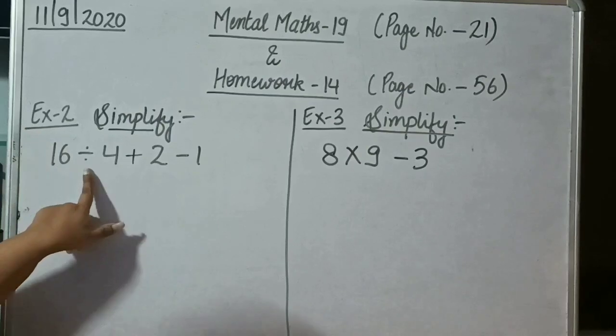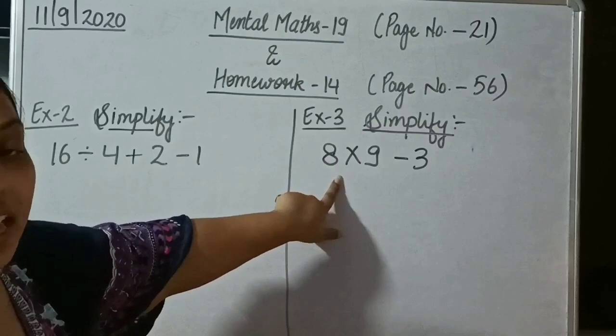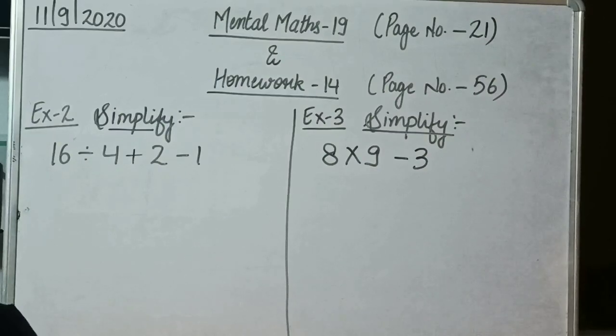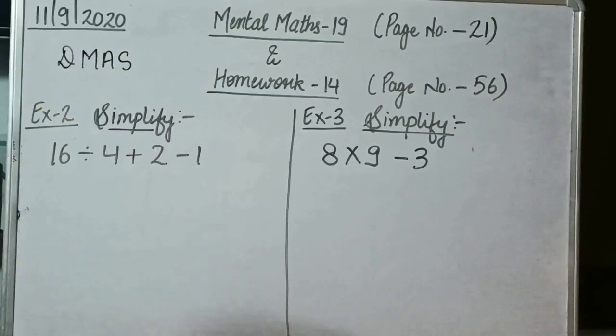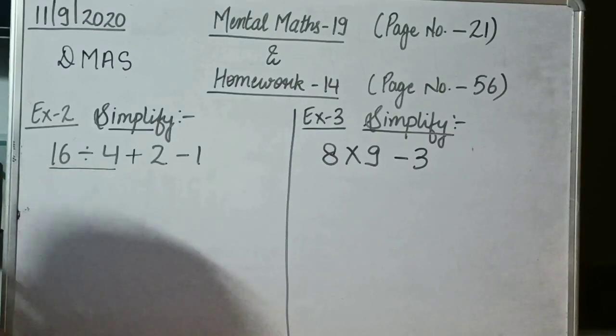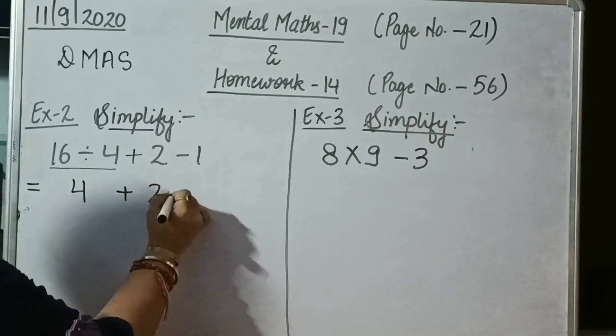Now in these 2 examples, we can see that there are 2 or more than 2 operations together. In example 2, we have 3 operations together: divide, addition, subtraction. And in example 3, we have 2 operations together: multiply and subtract. For simplifying these questions also, we will follow the same sequence DMAS. First we will check is there divide in the question or not. In first we can see that we have divide in 16 divide by 4. So first we will divide. 16 divide by 4 will be 4, and rest will be as it is.